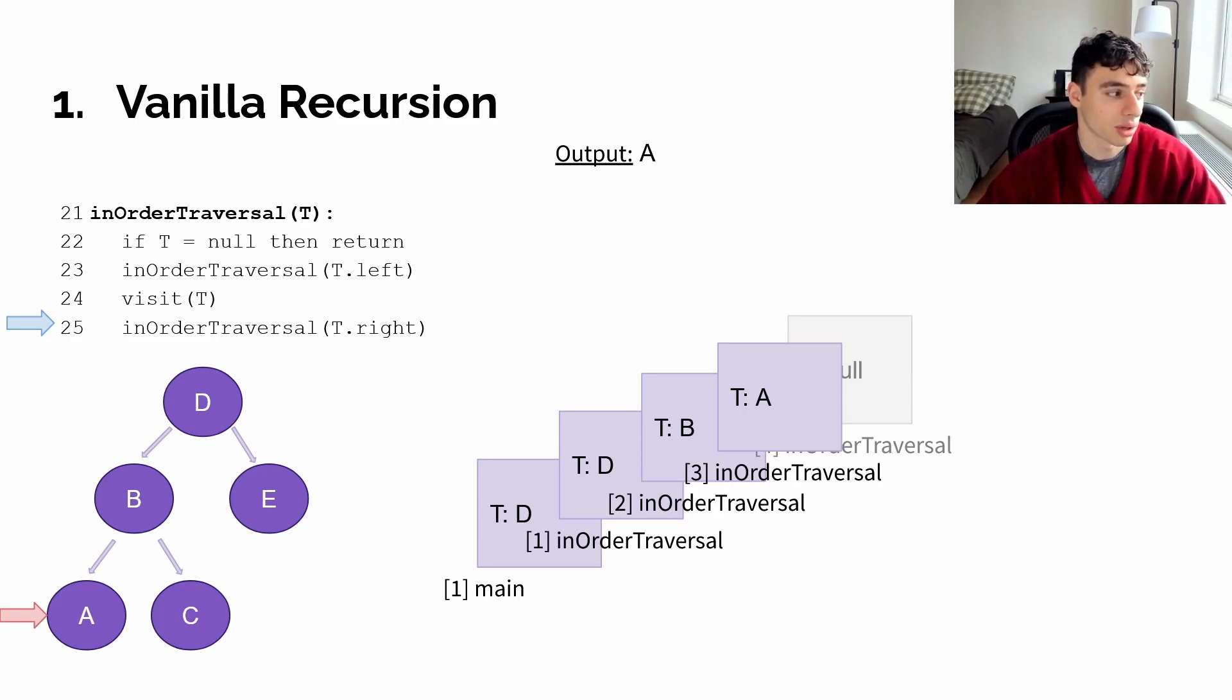It will run to line 25 after visiting A at line 24, so it gets added to our output. At 25, we have to add another stack frame number 5 to our call stack, which is A's right child, null. At stack frame 5, it will run to line 22 before terminating. Now, once this terminates, since A is also at line 25, A will also terminate, meaning we need to pop both stack frame 5 and stack frame 3 off the call stack.